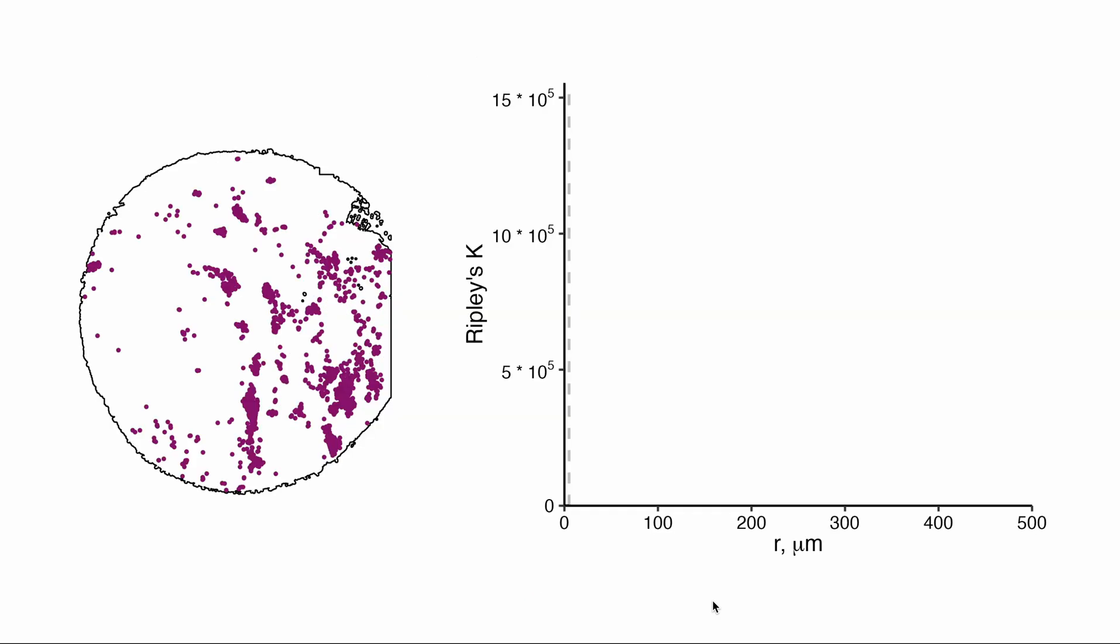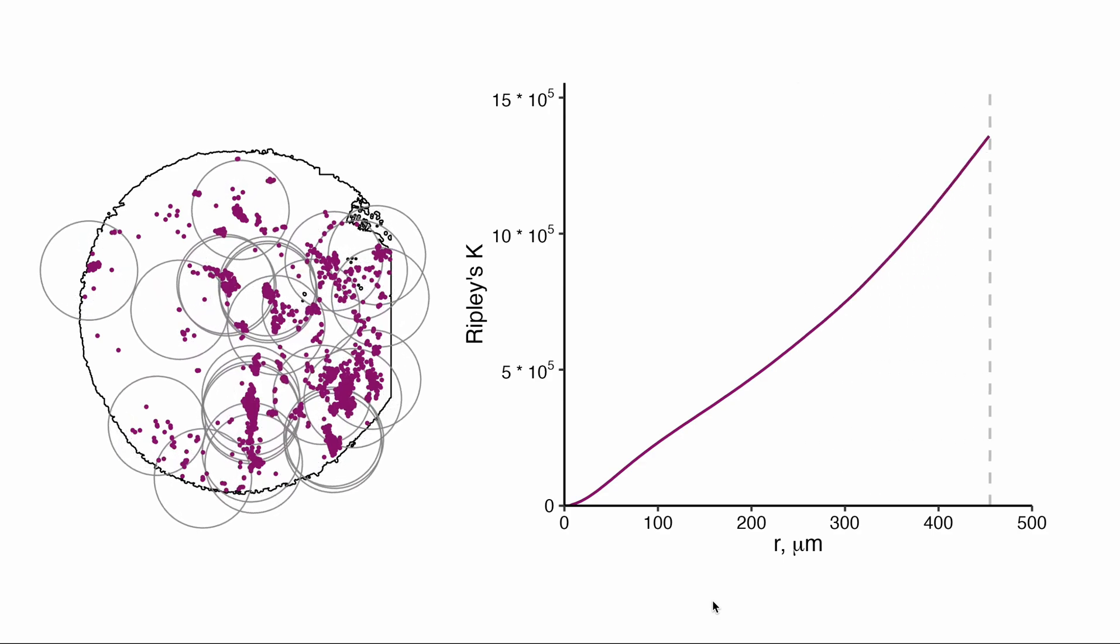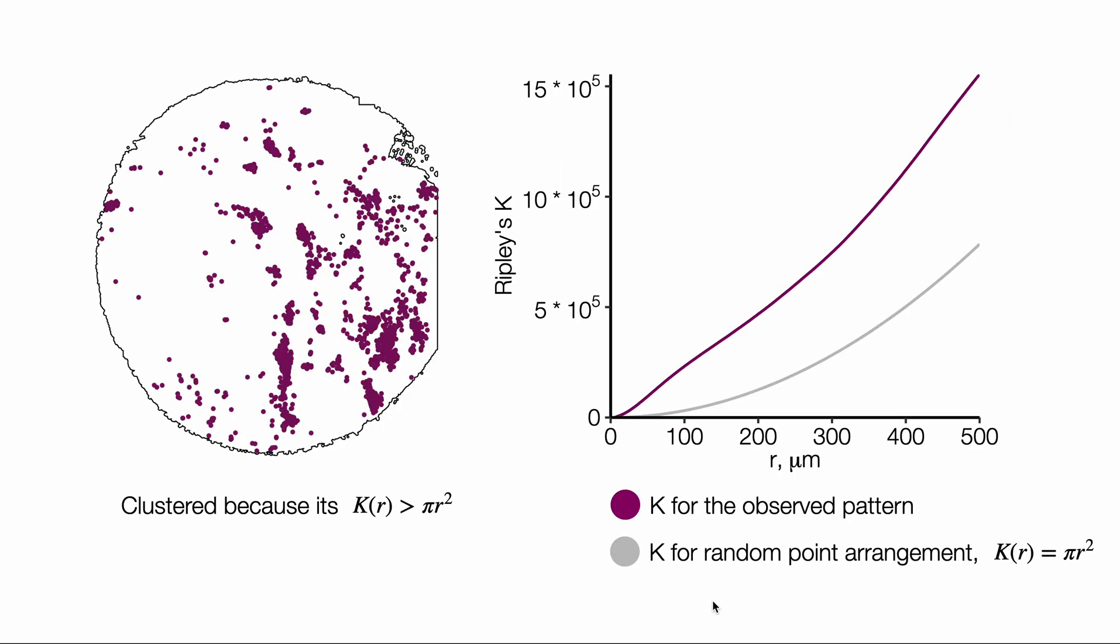Ripley's k-function, central to spatial statistics, counts the expected number of neighbors of a point at different distances. To detect deviation from spatial randomness, it can be compared to its expectation for a random arrangement of points. Higher values of k-function indicate clustering.